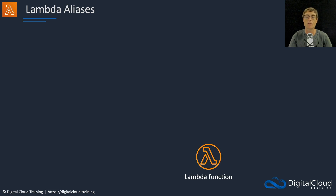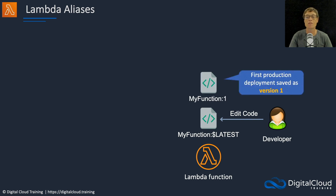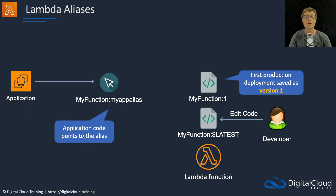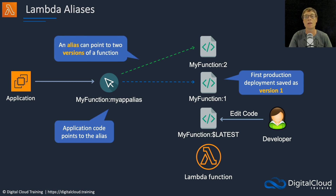Next up we have aliases. Our Lambda function has $LATEST where we do our editing. The developer edits the code and then creates a version — this is the first production deployment, saved as version one. We then create an alias: my-function colon, and rather than a version number, we use something like 'my-app-alias'. The application is configured to point to the alias, and the alias is configured to forward traffic to my-function:1. If we upload new code and publish version two, we can then configure the alias to redirect traffic to version two.